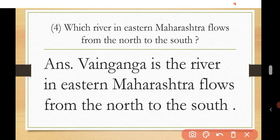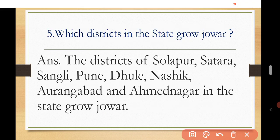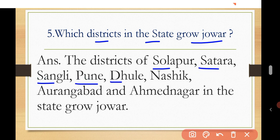Next question: which districts in the state grow grapes? The answer is: the districts of Solapur, Satara, Sangli, Pune, Dhule, Nashik, Aurangabad, and Ahmadnagar in the state grow grapes.